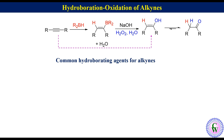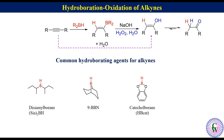The common hydroborating agents for alkynes are disiamyl borane, 9-BBN, catechol borane, and pinacol borane.